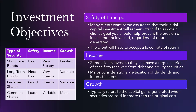Some clients also want regular income, which is basically cash flow received often from debt and equity securities — bonds and some dividends from equities. The major considerations here are the taxation of dividends and interest income. Dividends are taxed more favorably than interest. Growth is another investment objective, typically referring to capital gains generated when securities are sold for more than the original cost.